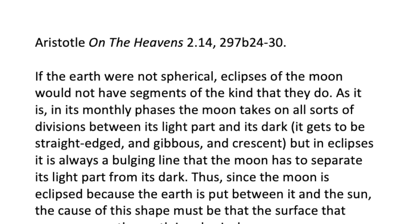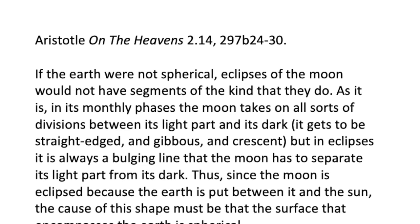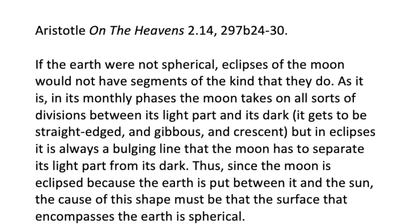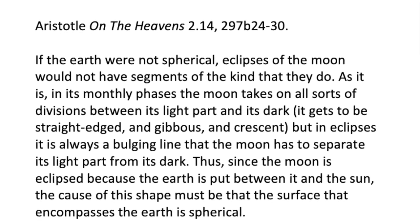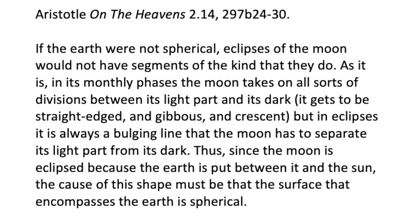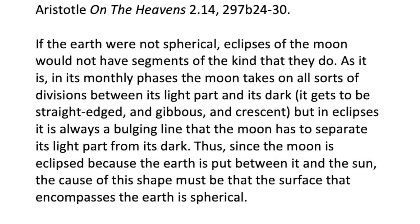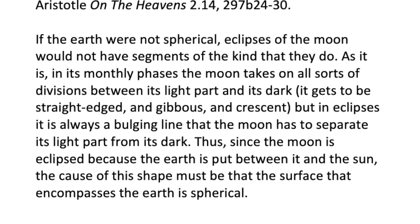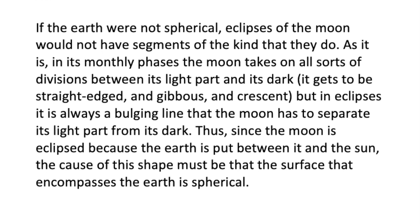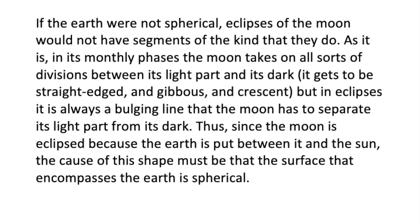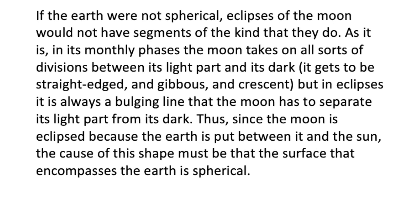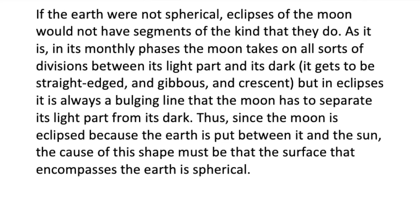If the earth were not spherical, eclipses of the moon would not have segments of the kind that they do. As it is in its monthly phases, the moon takes on all sorts of divisions between its light part and its dark. It gets to be straight-edged and gibbous and crescent, but in eclipses, it's always a bulging line that the moon has to separate its light part from its dark. Thus, since the moon is eclipsed because the earth is put between it and the sun, the cause of this shape must be that the earth's surface that encompasses the earth is spherical.